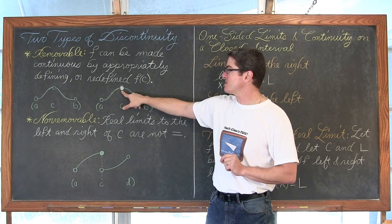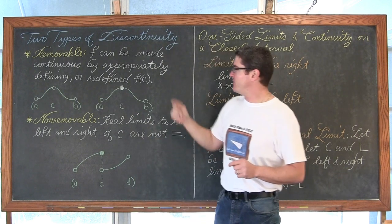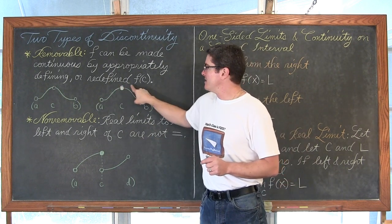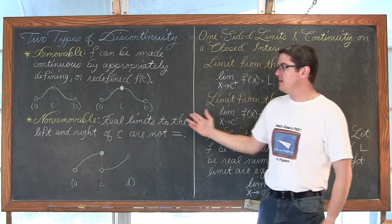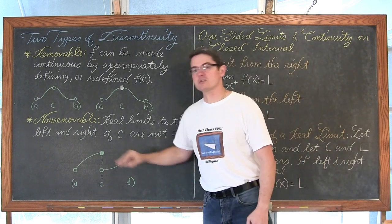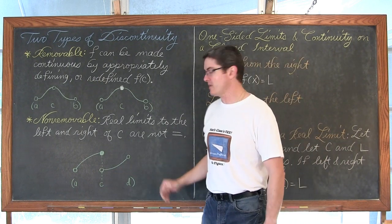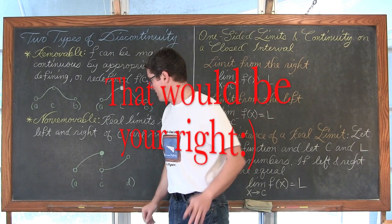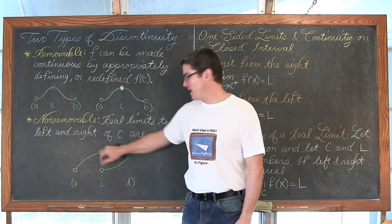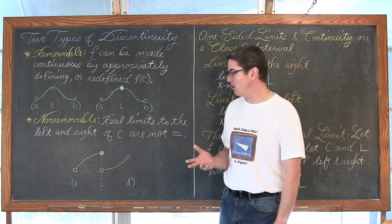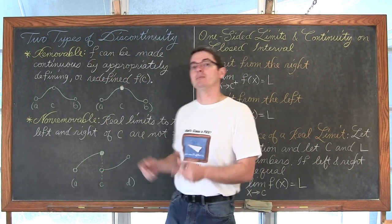If the limit as x approaches c of f(x) equals, say, 5, but the function itself doesn't exist there, you define f(c) equal to the limit value and fill in the hole, making the function continuous. A non-removable discontinuity is a clear break where the real limits from the left and right of c are not equal — you can't simply fill in a hole and draw it without picking up your pencil.